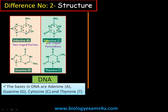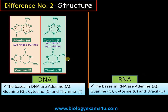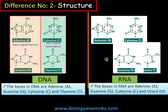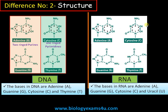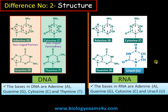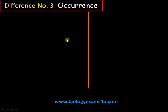It is easy to remember pyrimidines: 'py' — cytosine and thymine both contain the letter 'y'. Whereas in the case of RNA, the bases are the same except thymine; in place of thymine there is uracil in RNA. That's the only difference in nitrogenous bases.